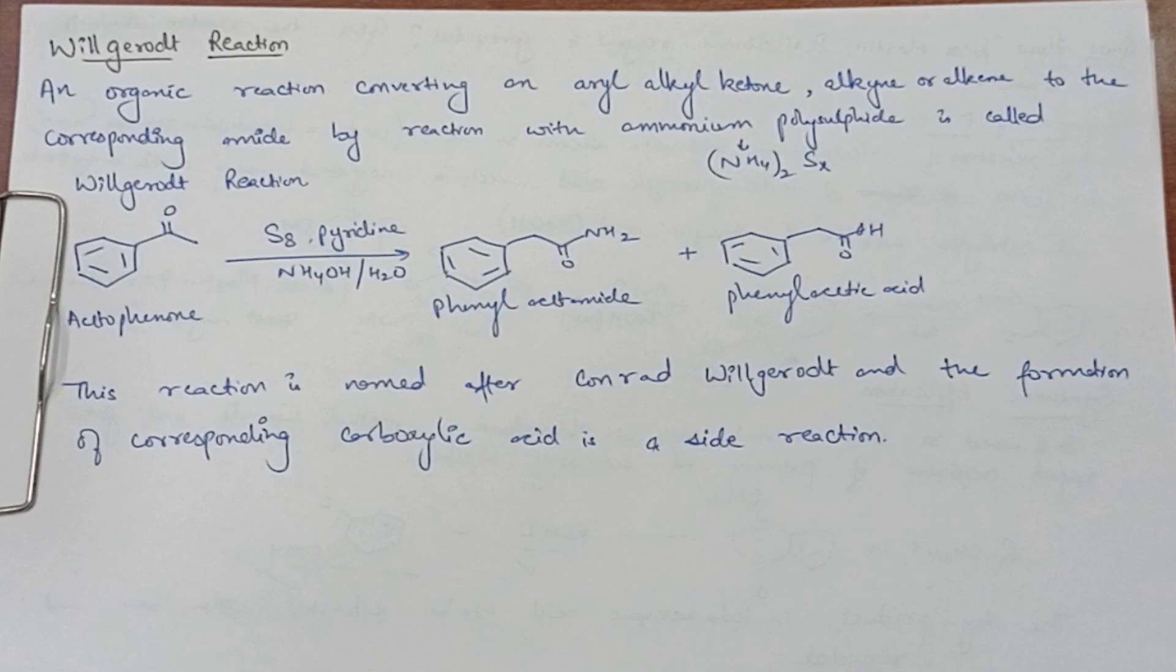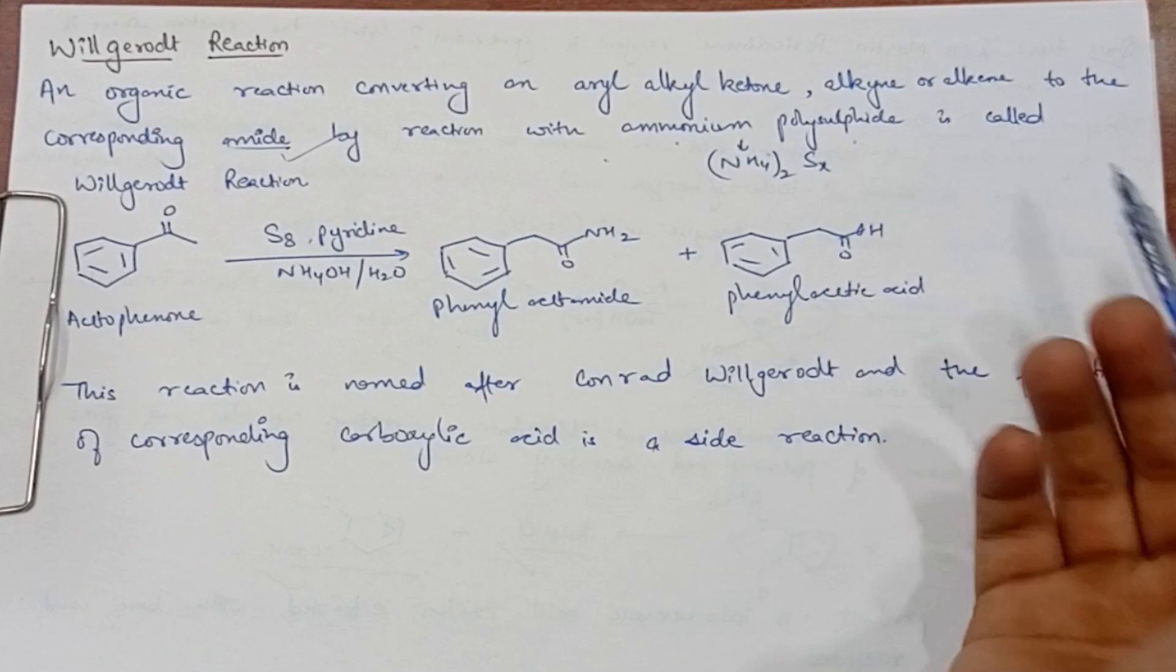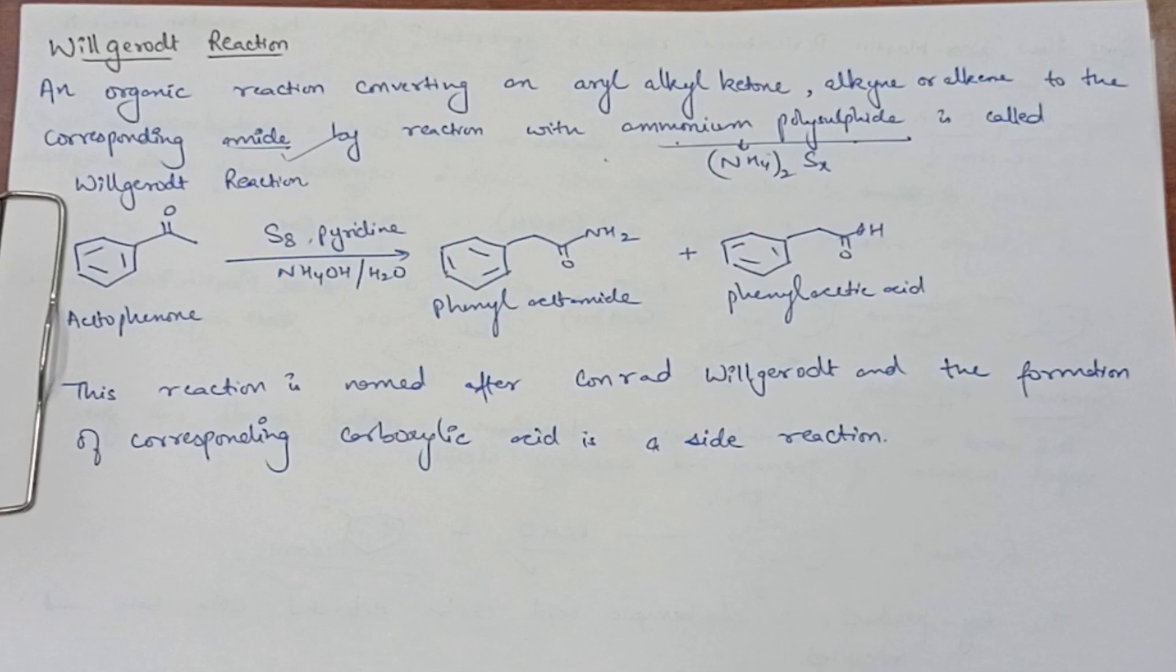Converting these to the corresponding amide by reaction with ammonium polysulfide. If we react with ammonium polysulfide, this is called Willgiroud reaction.